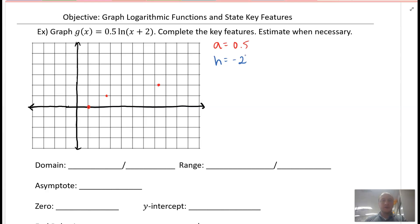So our parent function is given here. Now I have an h value of negative 2, so what's going to happen is our vertical asymptote at x equals zero is actually going to be x equals negative 2.